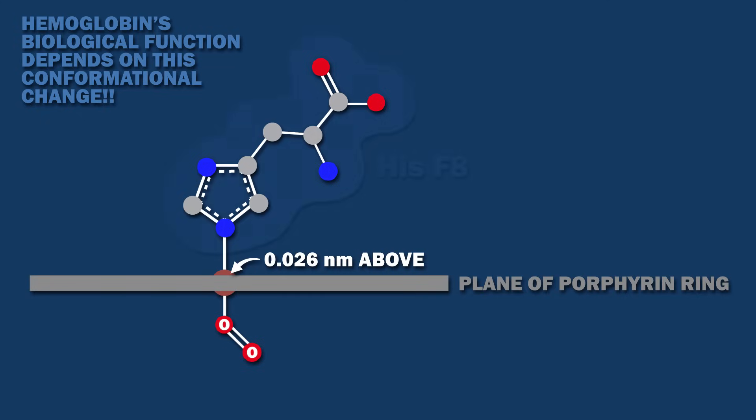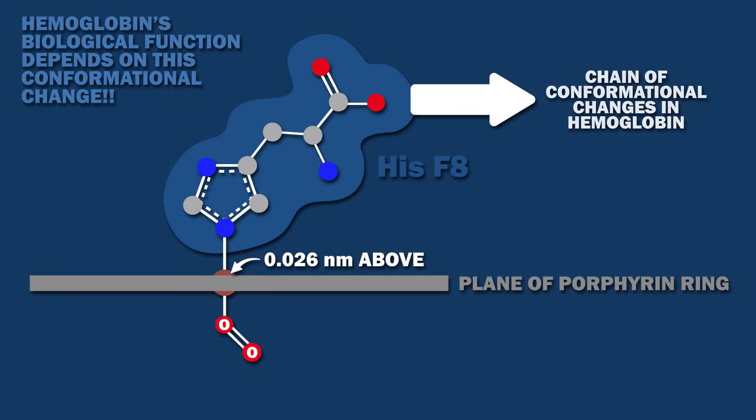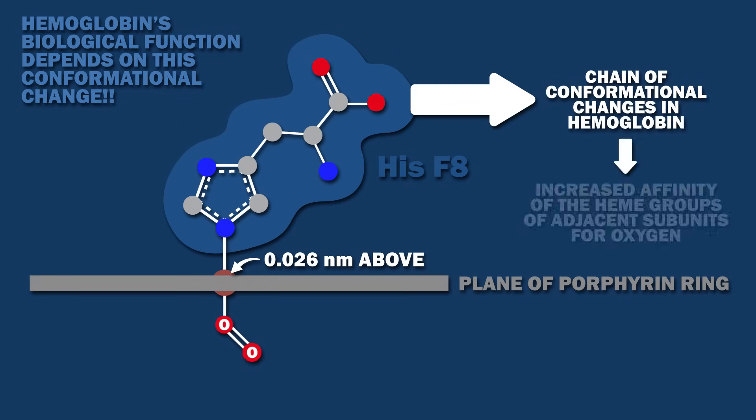The movement of the iron drags histidine F8 along with it, and sets off a chain of conformational changes in hemoglobin that results in increased affinity of the heme groups of adjacent subunits for oxygen.